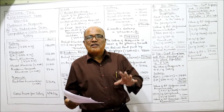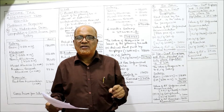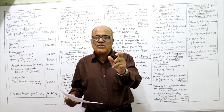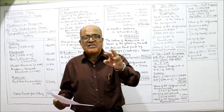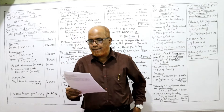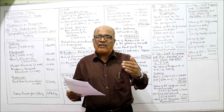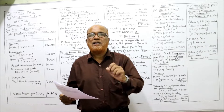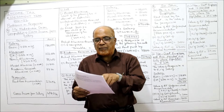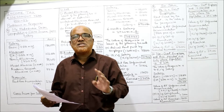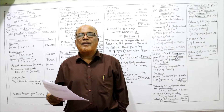Hostel allowance is 18,000 per annum for two children. The exemption is the least of: actual allowance received, or Rs. 3,600 per annum per child for a maximum of two children. Academic research allowance is 3,700 per month; only the unspent amount is taxable — here 3,700 per month, out of which only 80% was spent, so the remaining 20% is taxable.